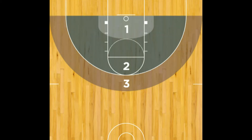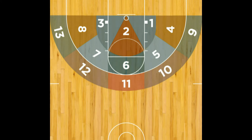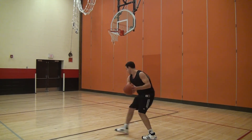For post moves, select spot number one if using the level one shooting chart, or select the spot from where you shoot the ball — not where you execute the move — in shooting charts levels two and three.